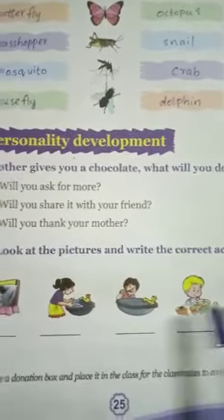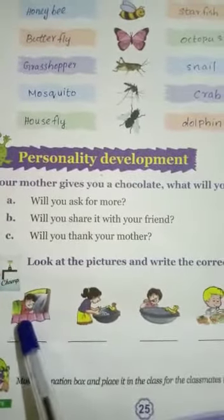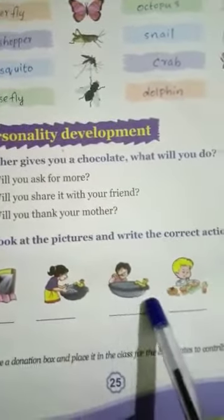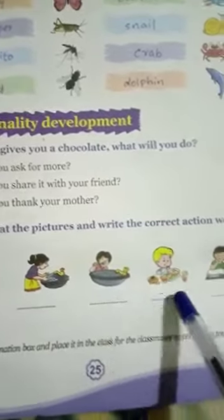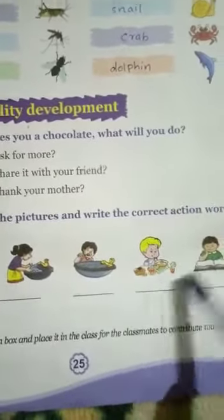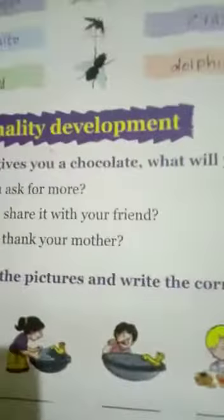Eating, reading — these are the actions we will correct and fill in here. What is this boy doing? Sleeping, washing, brushing, eating, reading — everything.